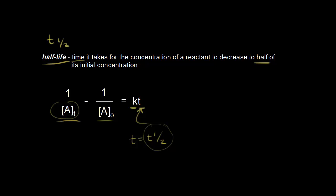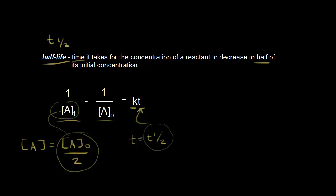What's the concentration of A? Well, using the definition for half-life, the concentration of A should be half of the initial concentration. So our initial concentration would be divided by two — that's half of our initial concentration. So we're going to plug that in and see what we have.